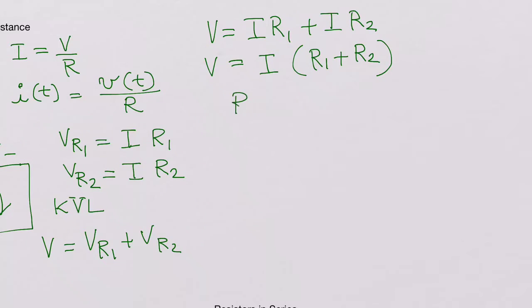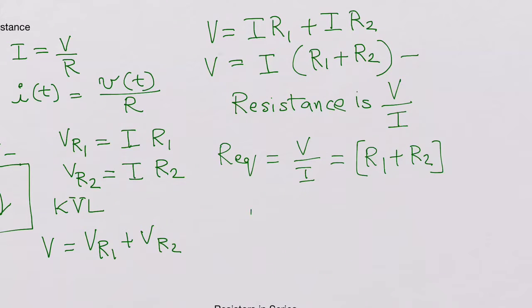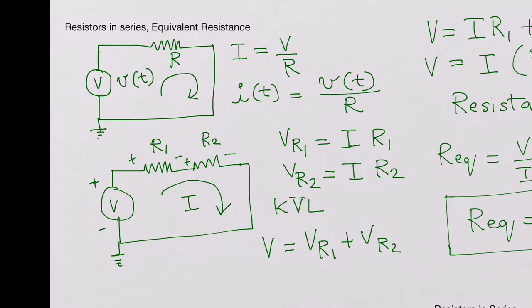Now resistance is voltage over current. To find R equivalent for this series resistance, you divide voltage by the current, which is V over I. From this equation, it would be R1 plus R2. So we know for the series connection, R equivalent equals R1 plus R2. What we found is the same current flows through both R1 and R2, but different voltages are dropped across R1 and R2.